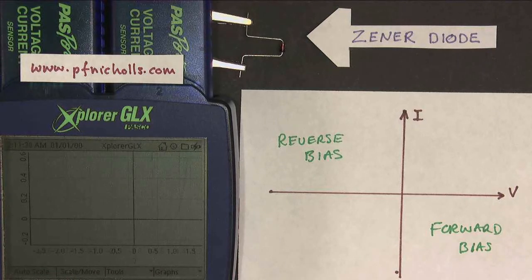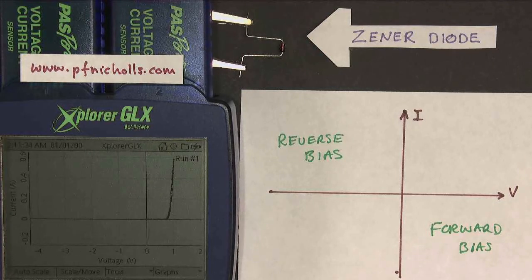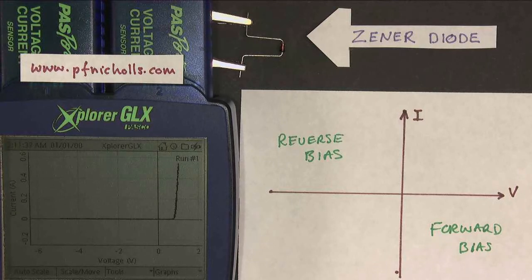As you can see, no current's flowing, and if I keep going, the graph will keep rescaling until I get to the point where it's going to start conducting in reverse bias. And there it goes.